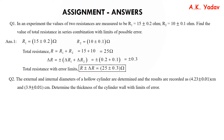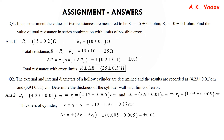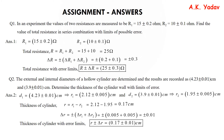Question 2: The external and internal diameters are given. Dividing each diameter by 2 gives the external and internal radii. Thickness = external radius − internal radius. Putting in the values gives the thickness. For the error: delta R1 + delta R2 = ±0.01. So the total thickness with error limits is 0.17 ± 0.01 centimeters.